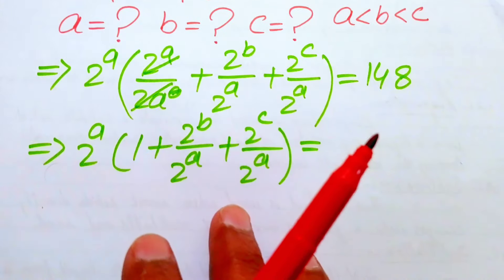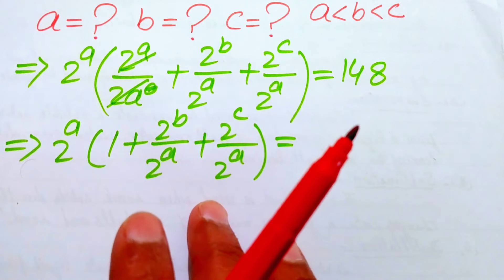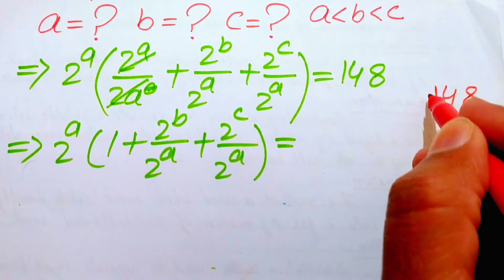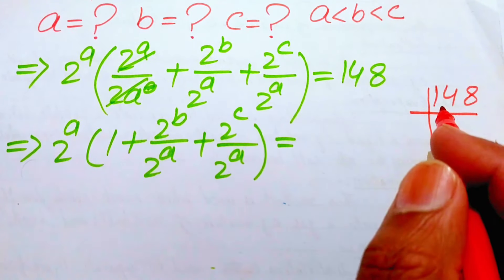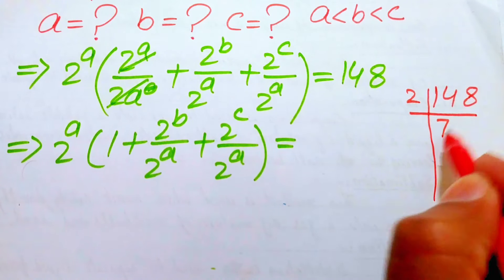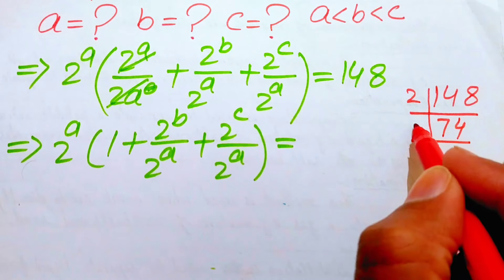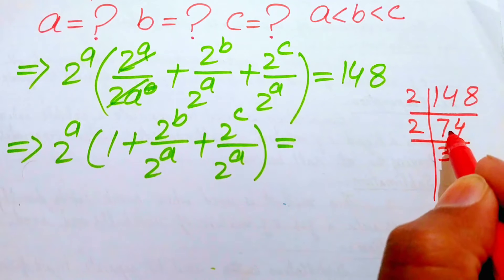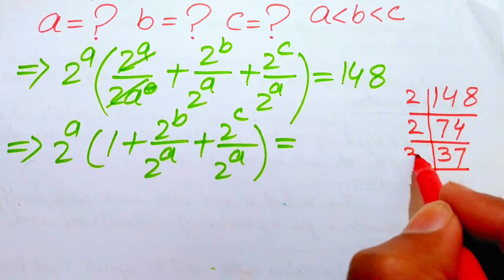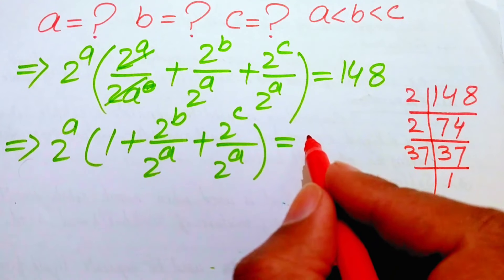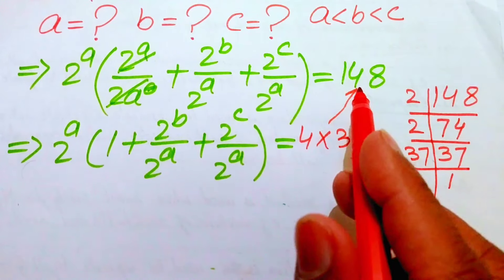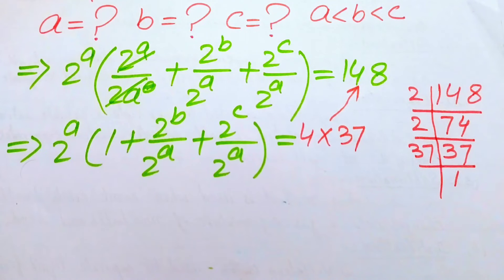Now we find the prime factors of 148. We divide by 2 to get 74, divide by 2 again to get 37, then divide by 37 to get 1. So the prime factorization gives us 4 times 37 equals 148.